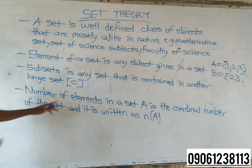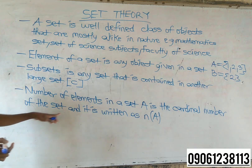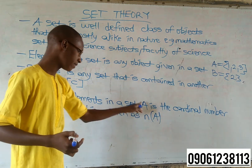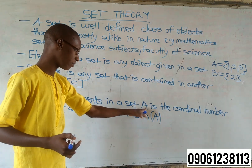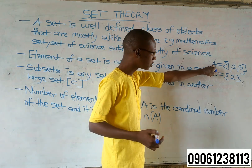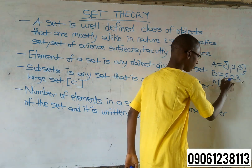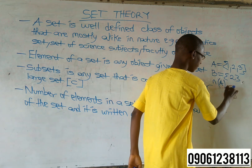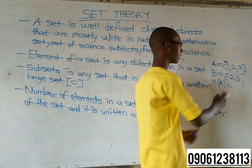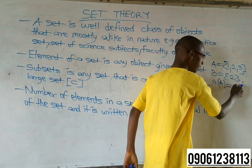This includes the number and elements in a set — this is the count of number of the set, and it is written as number of A. No name does not apply to set B. The number of A and B is equal to 2. So when you say that elements are in the set, you can see the elements are in the set.